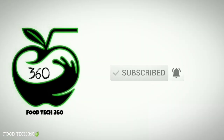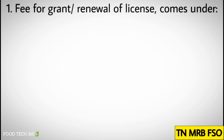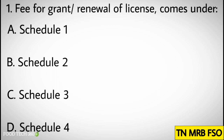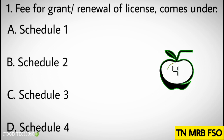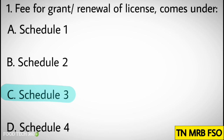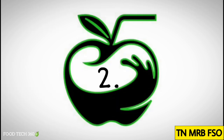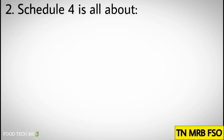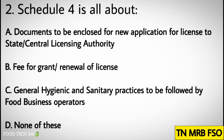Question number one: Fee for grant or renewal of license comes under — options: A) Schedule one, B) Schedule two, C) Schedule three, D) Schedule four. Correct answer: C) Schedule three.